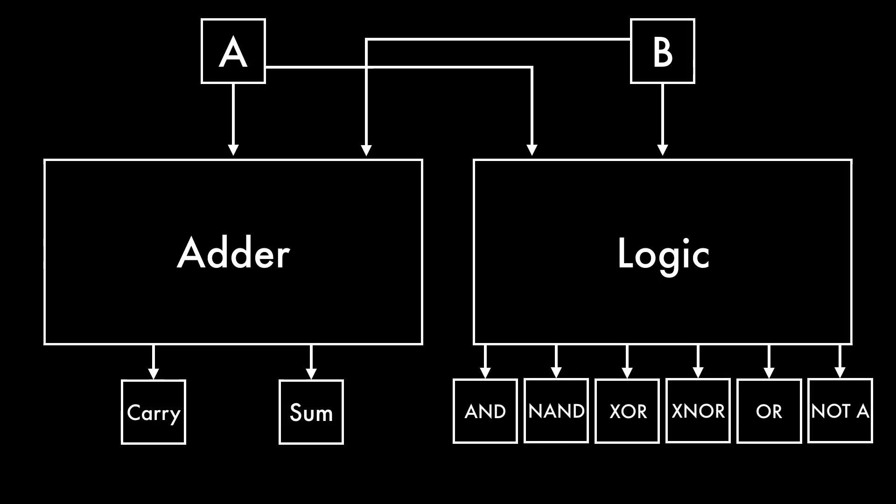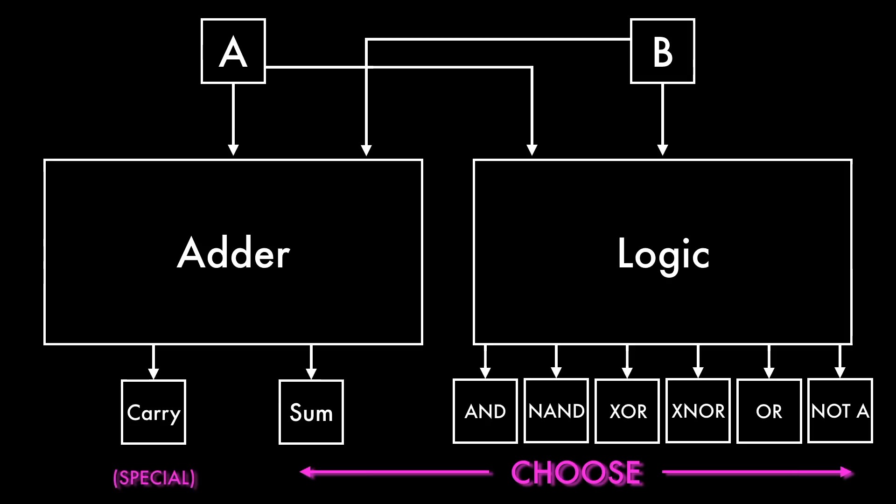In order to build a computer, I need some way of choosing which of the many outputs I want to actually use for a given operation. To do that, I need a multiplexer.